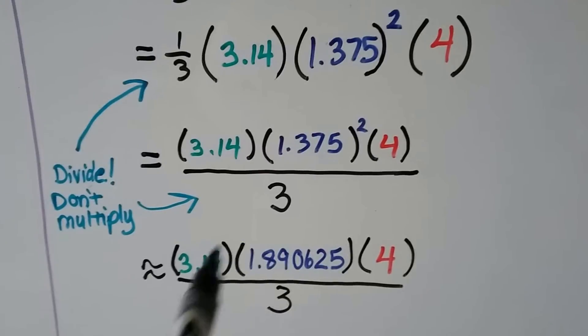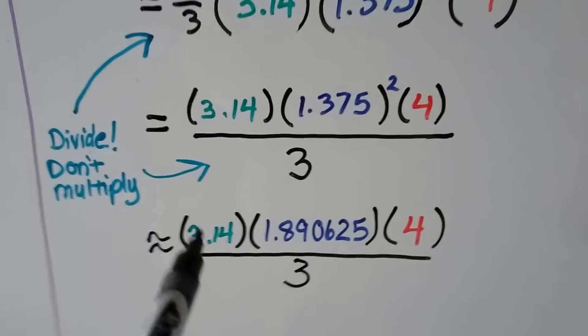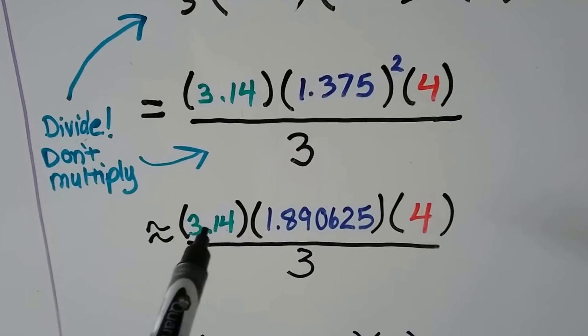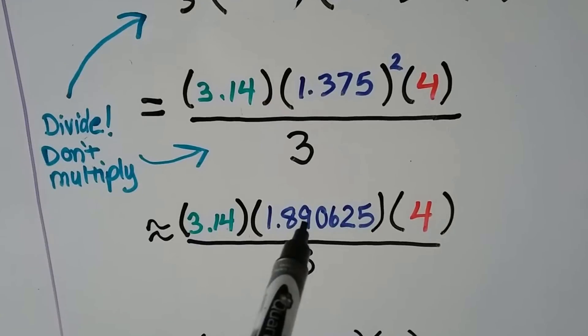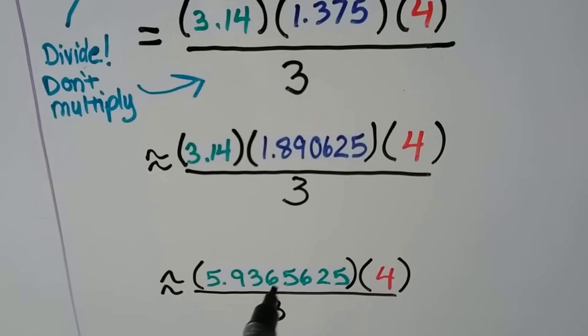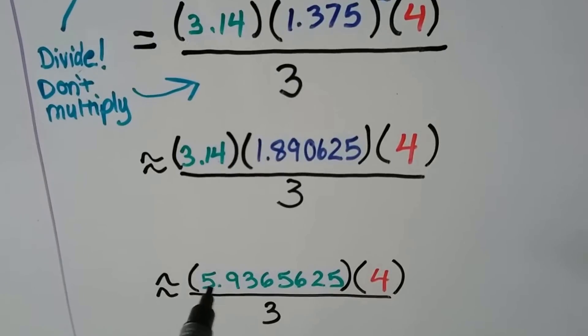Now we can multiply it to our pi, but remember, it's not all the digits for pi, so this is just an approximation. We multiply the 3.14 times our radius squared, and we get 5.9365625. Nice long decimal number.